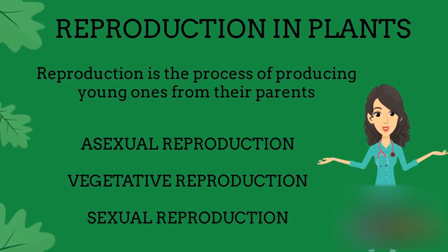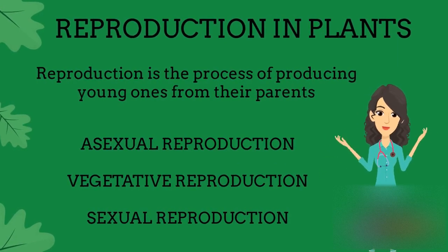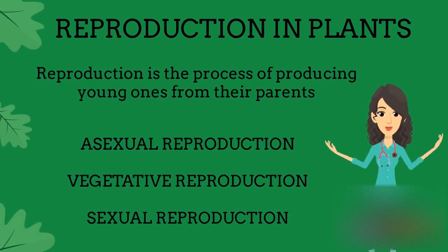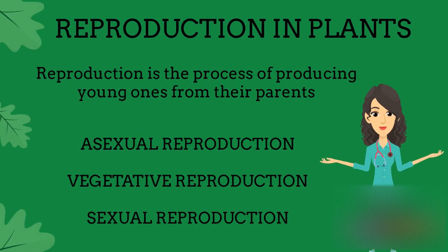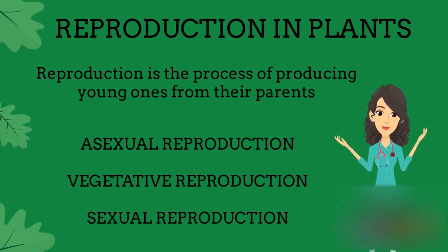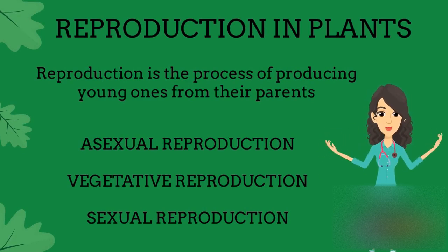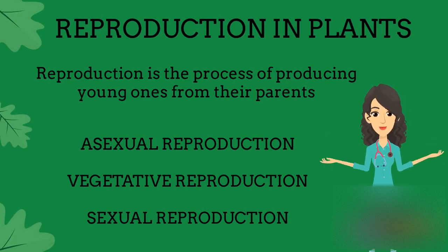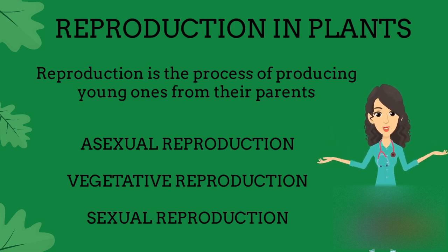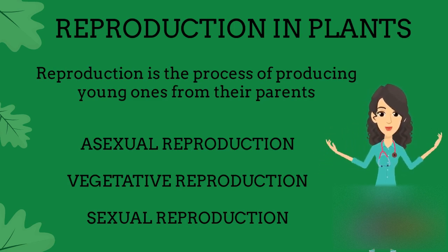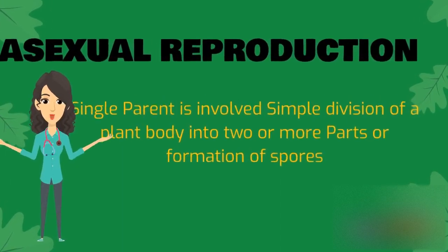Reproduction in plants is the process of producing young ones from their parents. The types of reproduction that take place in plants are: asexual reproduction, vegetative reproduction, and sexual reproduction.